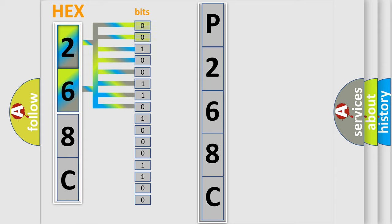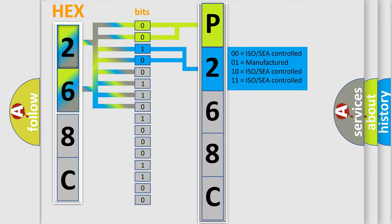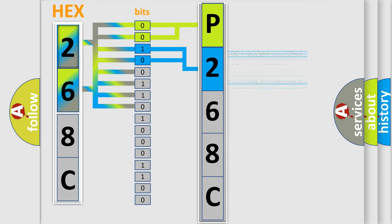Zero is the low level, and one is the high level. By combining the first two bits, the basic character of the error code is expressed. The next two bits determine the second character. The last four bits of the first byte define the third character of the code.